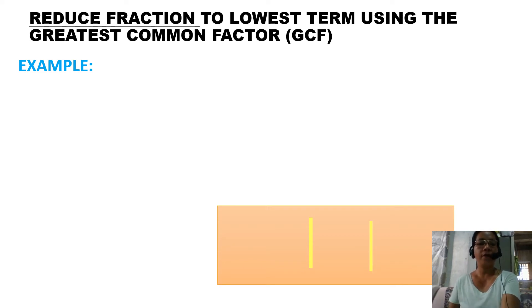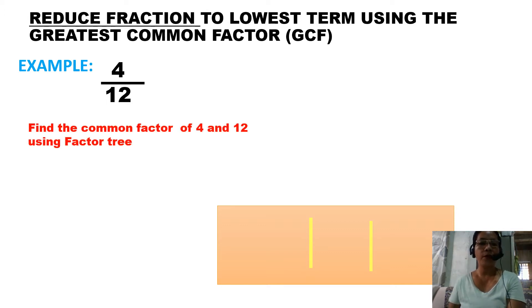Let's have an example. We have here 4/12. We are going to reduce 4/12 into lowest term. We will find out the factors of 4 and 12 so that we will be able to get the lowest term. How to get the common factor? First we list down the factors of 4 and 12. Find a common factor of 4 and 12 using factor tree. You can also use continuous division to find the factors. I use factor tree here.